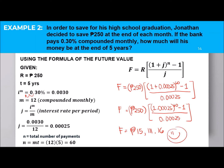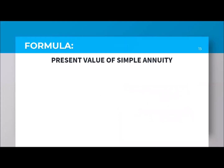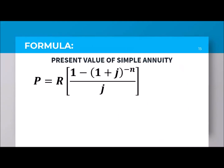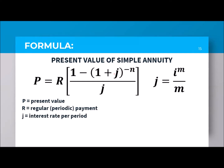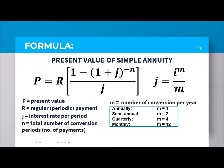Now let us proceed to finding the present value for the simple annuity. The formula is almost the same — the difference is that instead of 'raised to N minus 1' in the numerator, it becomes '1 minus (1 plus J) raised to negative N' all over J. Also, P now represents the present value instead of F. Everything else remains the same.